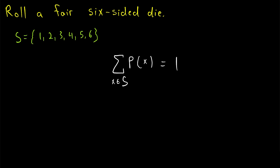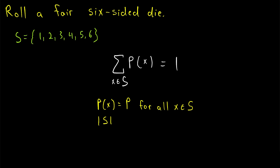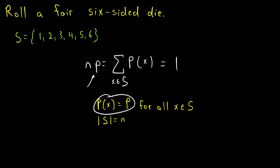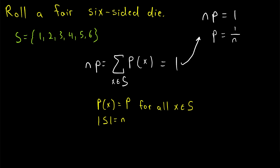In an experiment with a sample space S, one of the outcomes in S has to happen. So if we add up all the probabilities, it must be equal to 1, because it's guaranteed that some outcome in the sample space needs to happen. However, if all of the probabilities are equal — say the probability of x equals some number P for every outcome x — then this sum is just adding the same probability P to itself over and over. If the sample space has n possible outcomes, the sum equals n times P, which must equal 1, so the probability of each outcome is 1 divided by n.